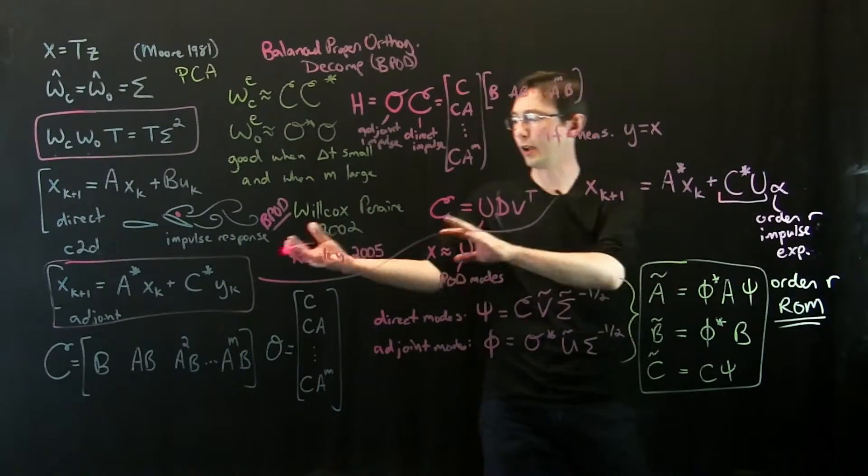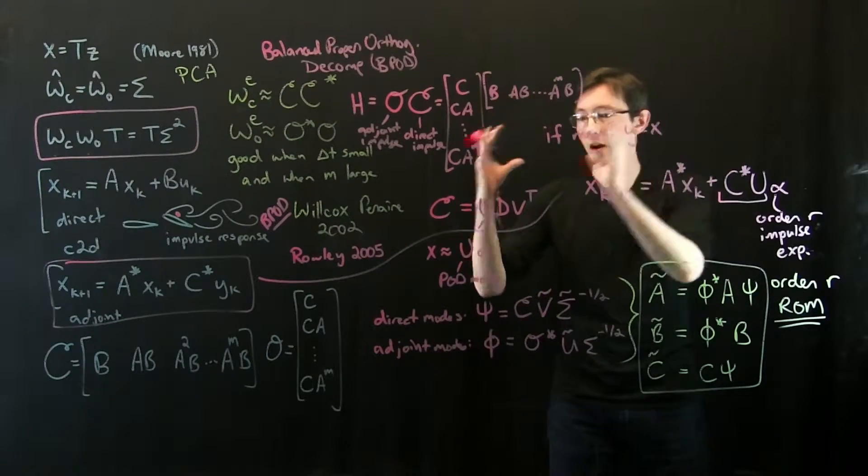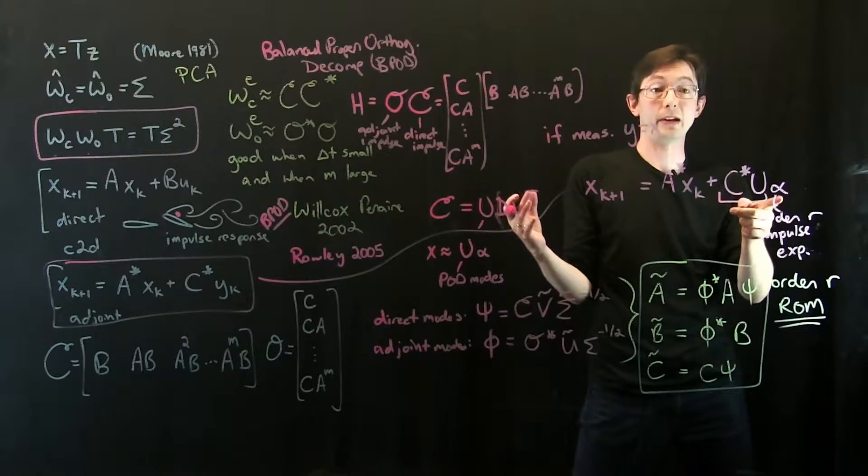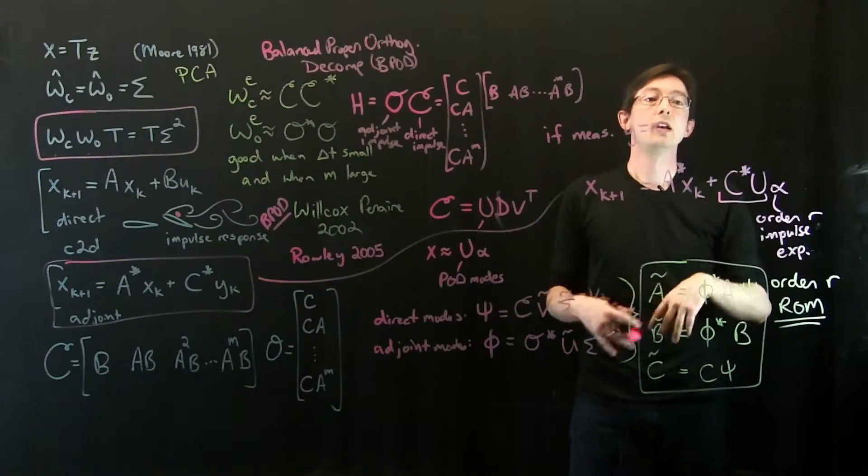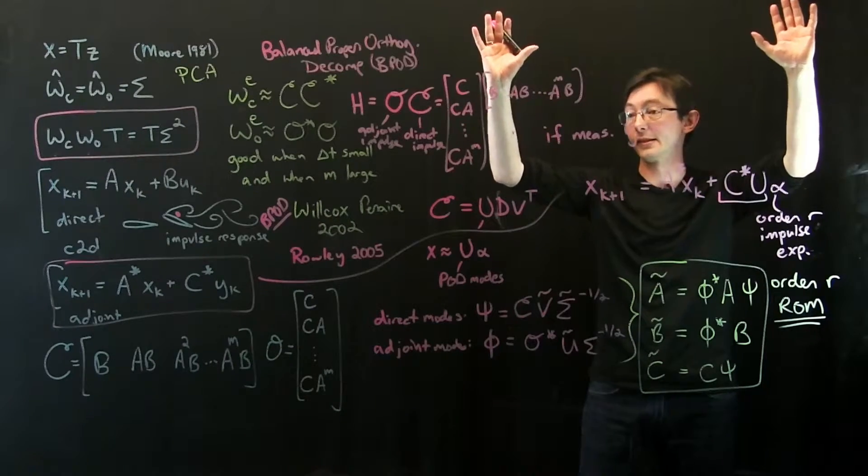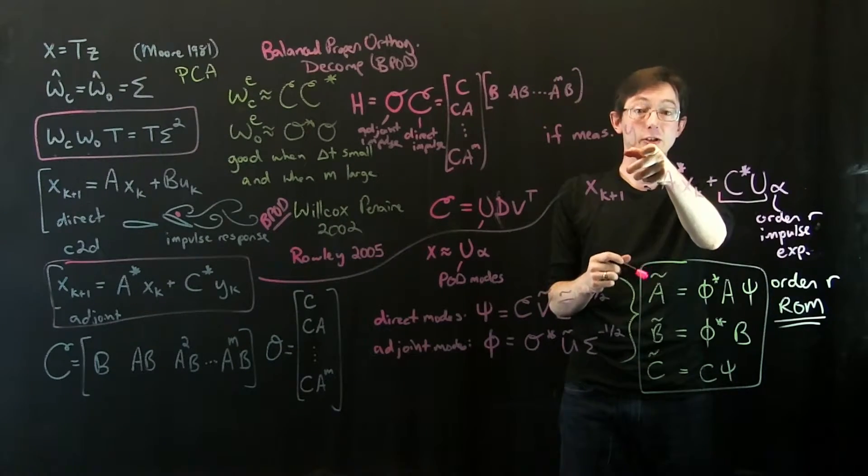What Clancy Rowley did was he said, okay, find the dominant patterns in the data and only excite those dominant patterns for the adjoint response. So that's another critical innovation when you're going to very high dimensional systems. And if you have full state measurements, if you want a model based on full state measurements,